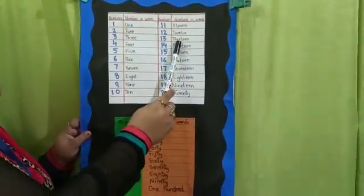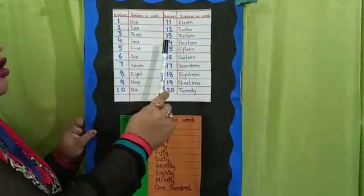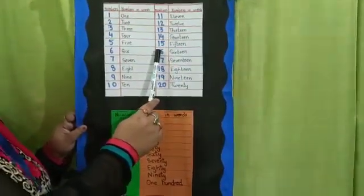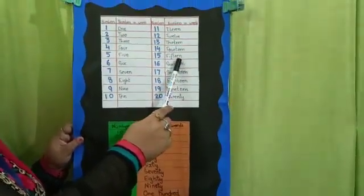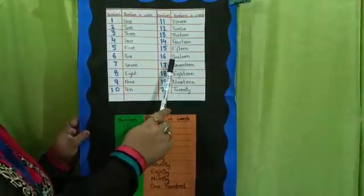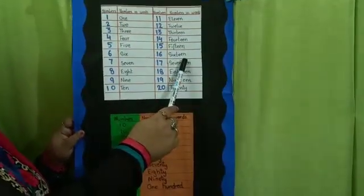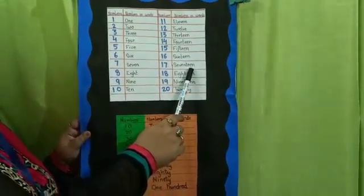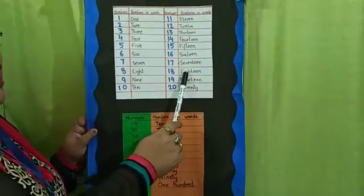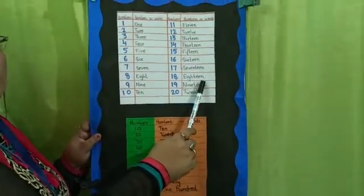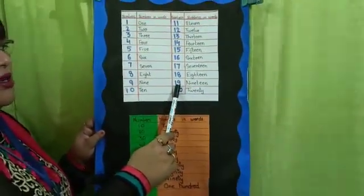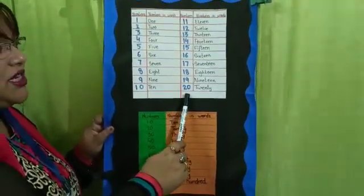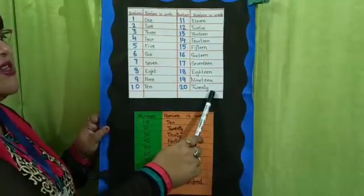13. THIRTEEN 13. 14. FOURTEEN 14. 15. FIFTEEN 15. 16. SIXTEEN 16. 17. S-E-V-E-N-T-E-E-N 17. 18. E-I-G-H-T-E-E-N 18. 19. N-I-N-E-T-E-E-N 19. 20. TWENTY 20.